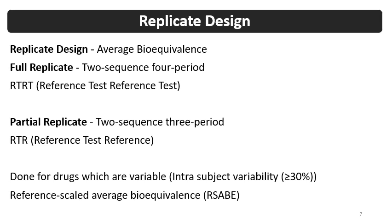Two types of replicate studies exist: full replicate and partial replicate. Full replicate involves a 2-sequence, 4-period study, and partial replicate involves a 2-sequence, 3-period study. In full replicate, reference is given two times and test is given two times. In partial replicate, reference is given two times and test is given one time. These replicate designs are for formulations that show intrasubject variability more than 30%.